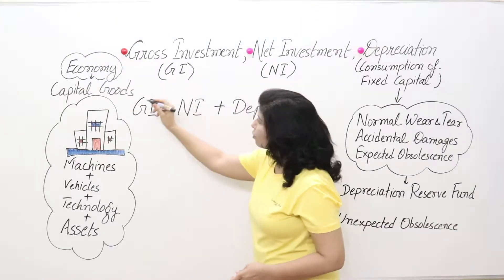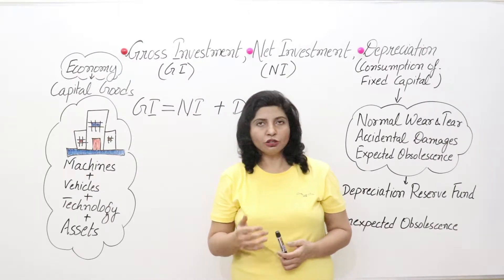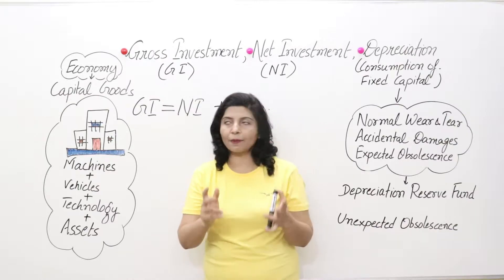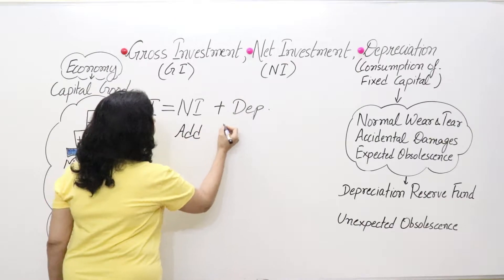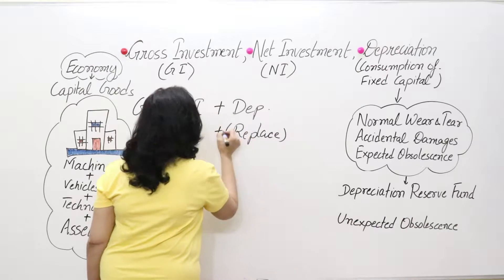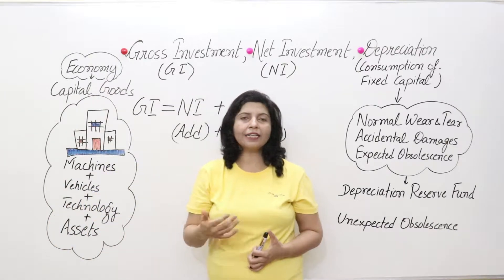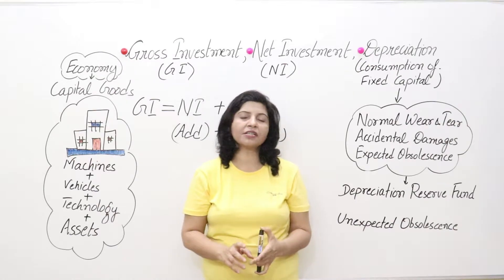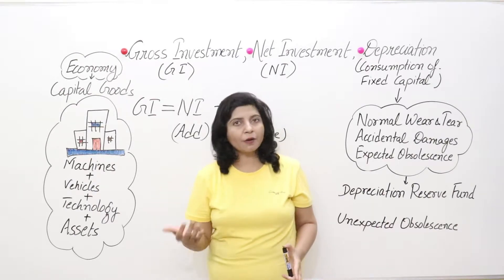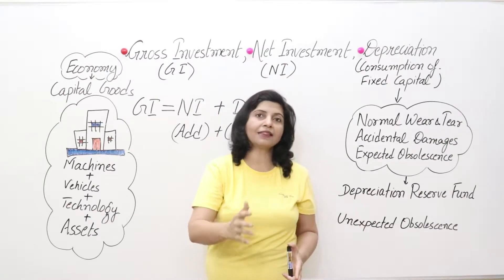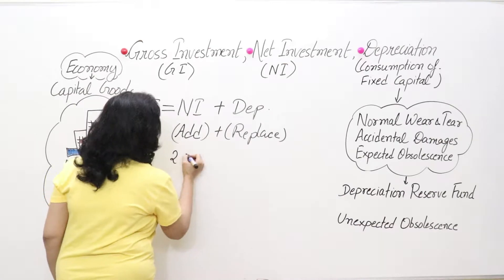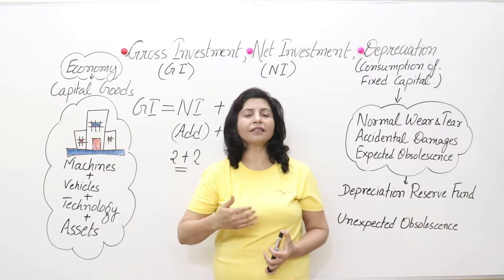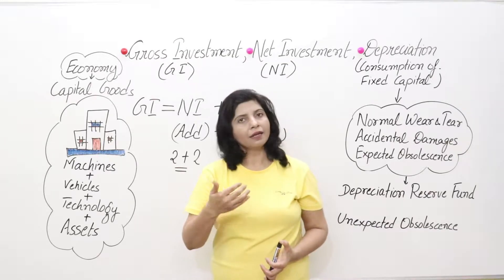Out of the total number of capital goods, some will be used to add to the existing capital stock and some to replace. So there are two functions of gross investment: add and replace. Suppose we have two machines in our factory. To expand production we need two more machines — that addition is net investment. Net investment is the net addition to the existing stock of capital in one year.